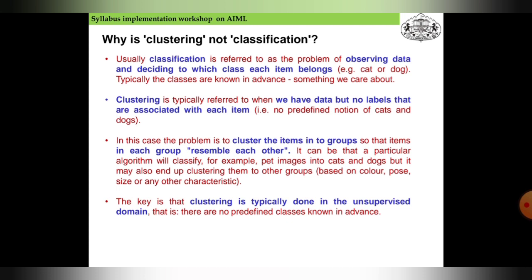Usually classification is referred to as the problem of observing data and deciding to which class an item belongs - is it a cat or dog? The typical classes are known in advance. Clustering is typically referred to when we have data but no labels that are associated with each item. That is, no predefined notion of cats and dogs.